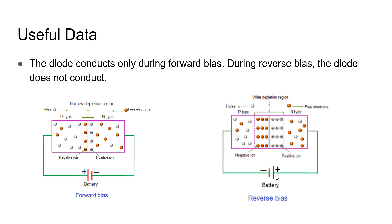In reverse bias, the positive terminal of the battery is connected to the N type material and the negative to the P type material. The majority electrons in the N type material will not be available for recombination. As a result, the depletion region will widen and there is no path for electron flow. Once this keeps increasing, there will be a point where the depletion region will break due to heat. All these forward and reverse bias characteristics are mentioned in the lecture above.